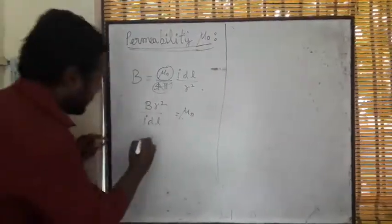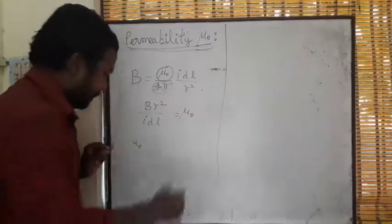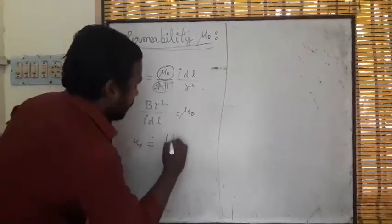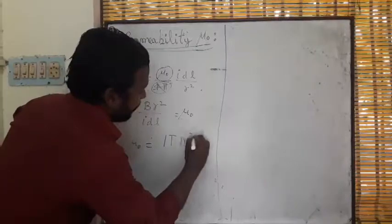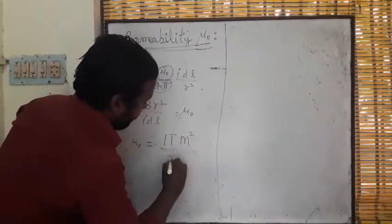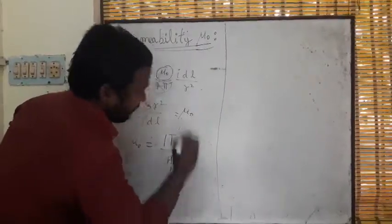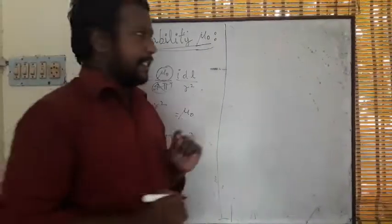B is Tesla, so mu naught value will be 1 Tesla meter squared by ampere meter. We should know what is Tesla.